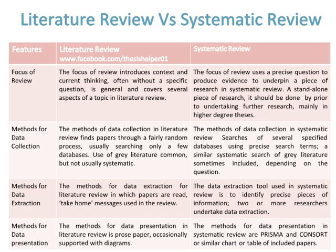The methods of data collection in a Literature Review find papers through a fairly random process, usually searching only a few databases. Use of grey literature is common but not usually systematic. In contrast, the methods of data collection in a Systematic Review involve searches of several specified databases using precise search terms, with a similar systematic search of grey literature sometimes included depending on the question.